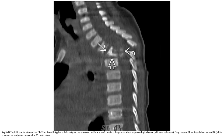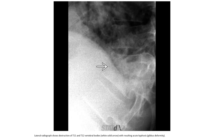CT exhibited destruction of the T4–T6 vertebral bodies with kyphotic deformity and extension of a paraspinal abscess into the lateral vertebral region and spinal canal. Only the residual T4 and T6 endplates remained after T5 destruction. Lateral radiographs show destruction of the T11–T12 vertebral body with resulting acute kyphosis.